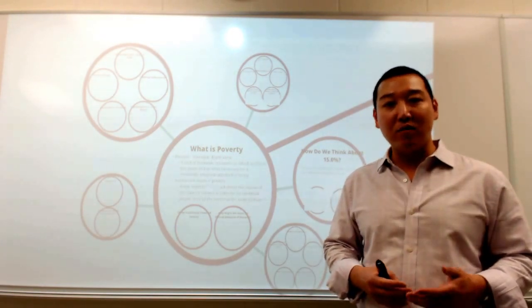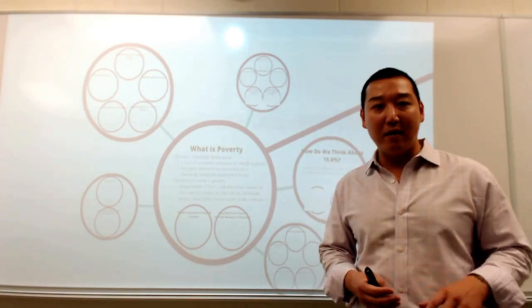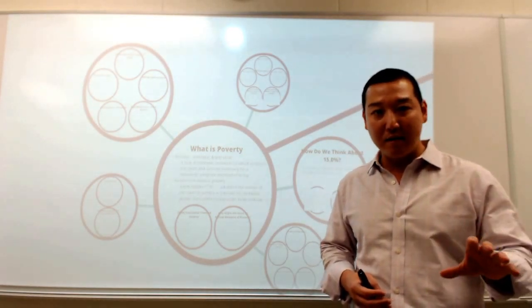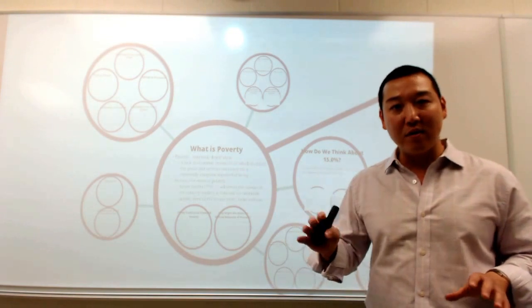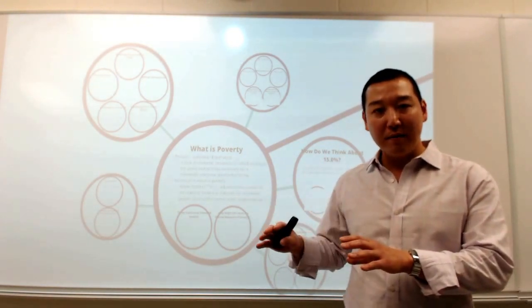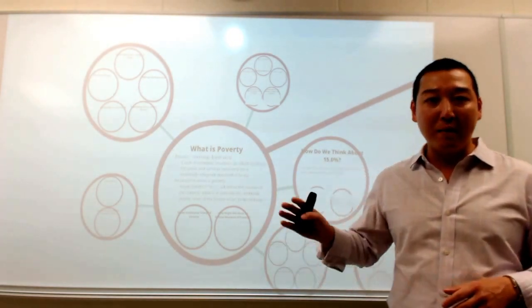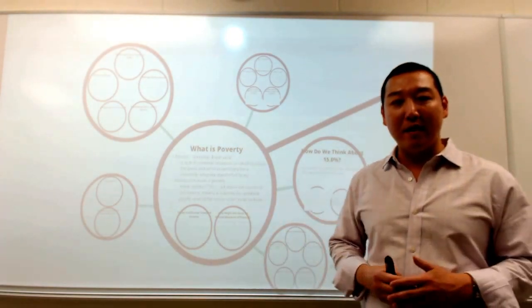And there's some more extreme versions of this argument basically equating genetic differences in the population with racial differences in the population and in turn income levels or economic levels, and so basically stating that race might be related to economic standing.